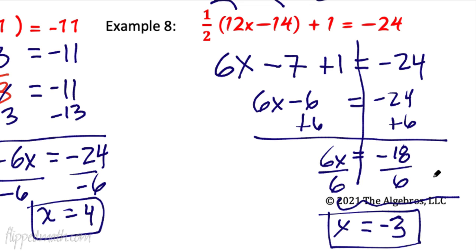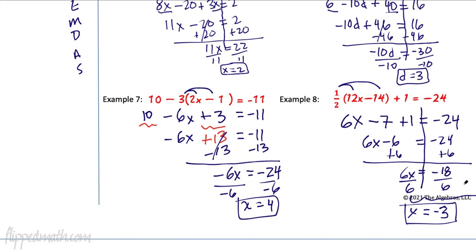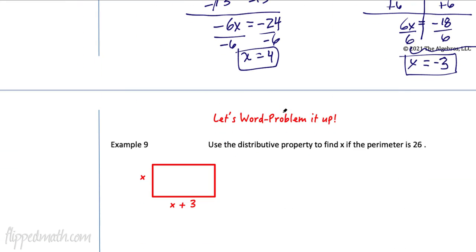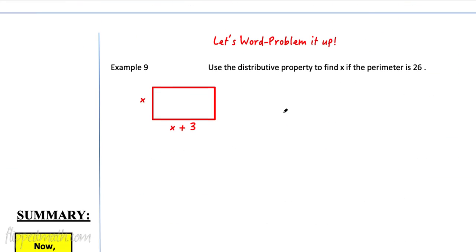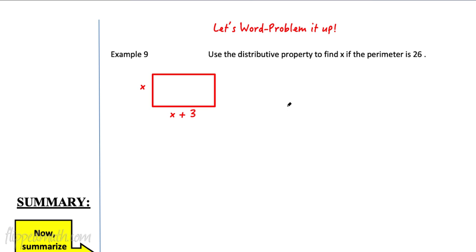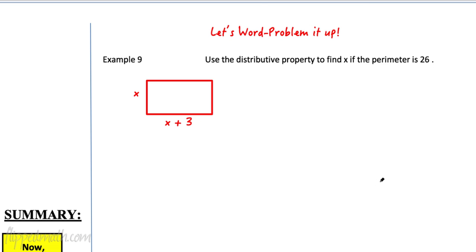And of course, we wouldn't be done unless I was able to give you one of these fancy word problems. Because I know you love word problems. But guess what? I gave you the same word problem as before. How come we can't just do it like we did before? Well, we can solve it that way. But this way asks us to use the distributive property. So when I create my equation, that's what I have to do. All right. So let's look at it. Last time we went like this. This plus this plus this plus this. And it all equals 26.